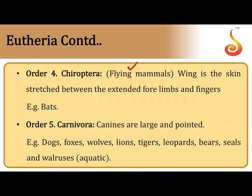In bats, the forelimb is modified into a structure that helps in flight, with skin stretched between the digits. This structure is referred to as the patagium (singular); the two structures together are called patagia.